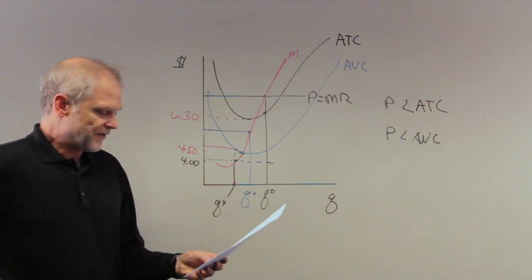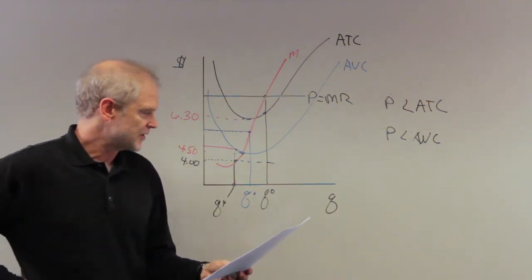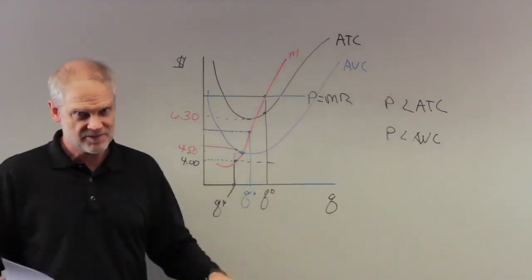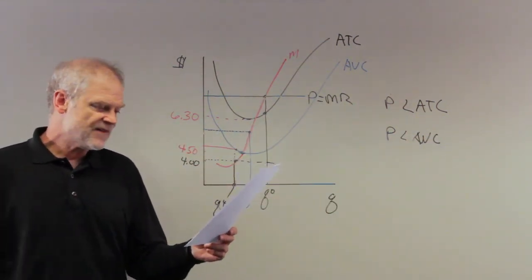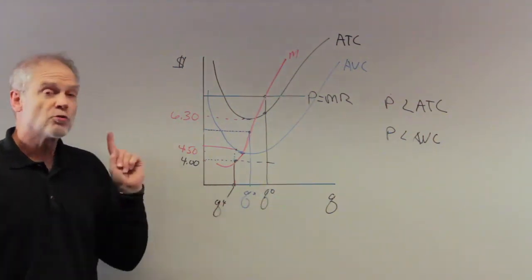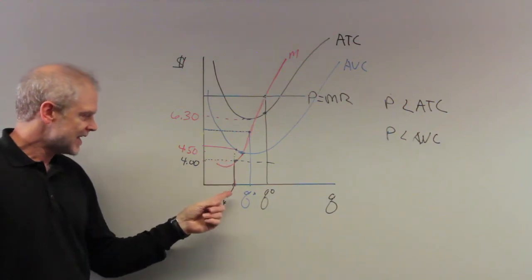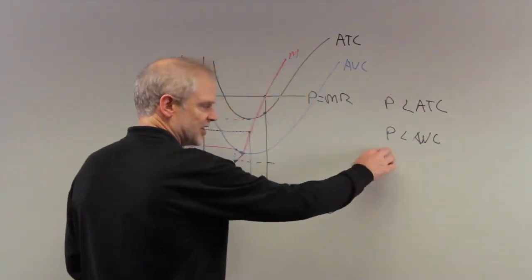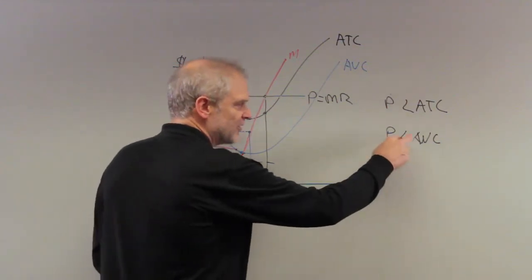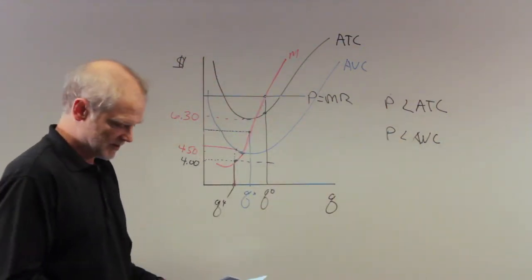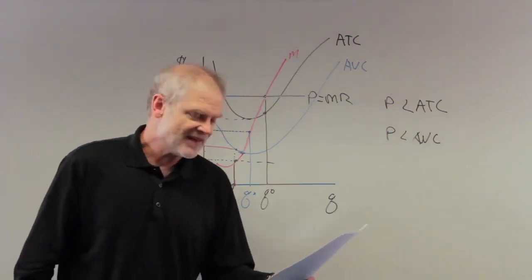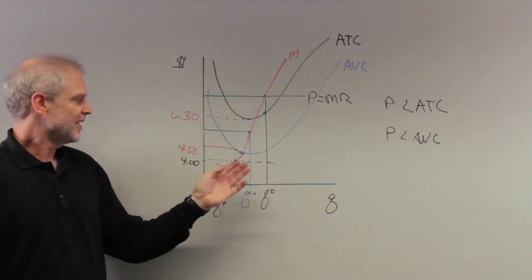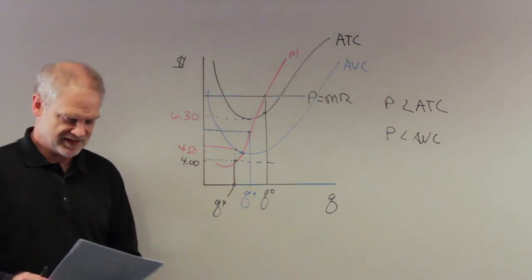At a price of $4, let's check the choices. A: positive economic profits — no way, price is less than both ATC and average variable cost; the firm is losing money hand over fist. B: negative economic profits but remain in business — wrong, because average variable cost exceeds price at this output level; you can't even cover basic variable costs. C: negative economic profits and shut down — yes, this is the only option. The firm is losing too much money and can't cover variable costs. This is a shutdown point.